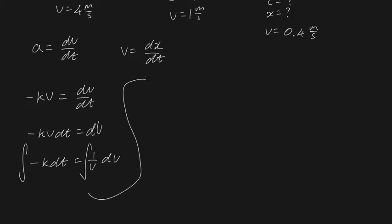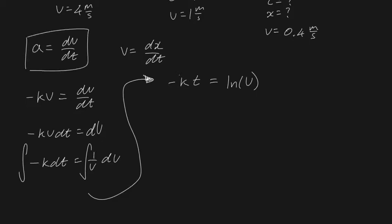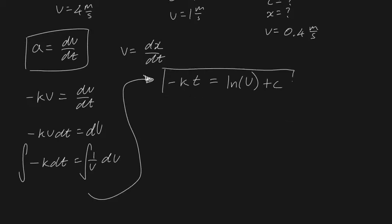After integrating, because k is a constant we factor it out to get minus kt on the left-hand side. On the right-hand side, the integral of 1/v dv is log v (natural logarithm). So the equation is minus kt = log v + c. We still need to find the integration constant c and the proportionality constant k, so we'll use boundary conditions.